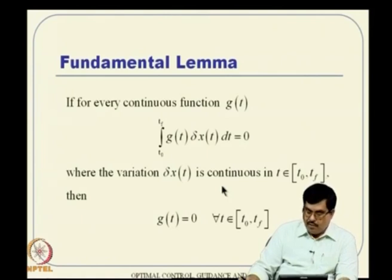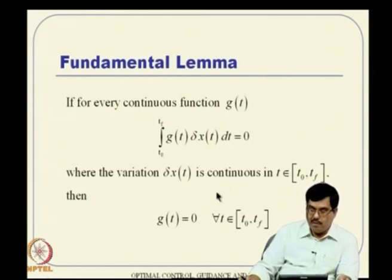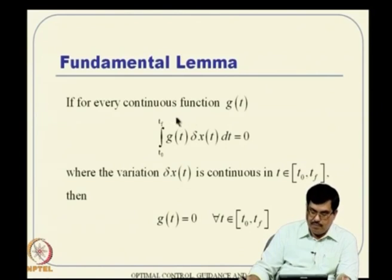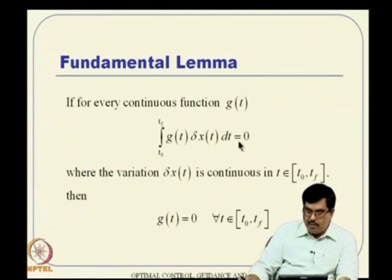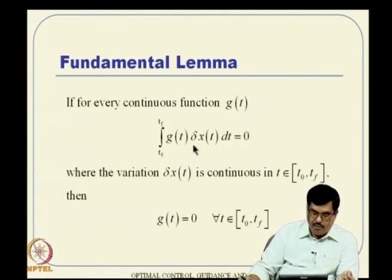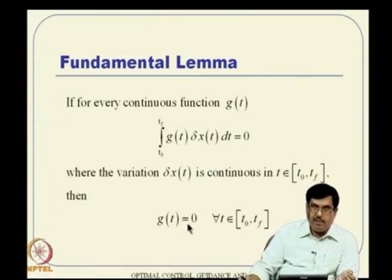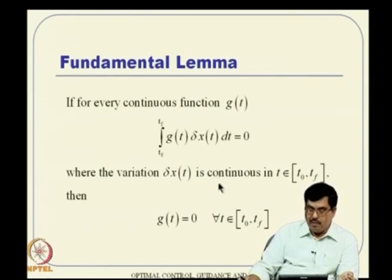We also proved it by contradiction: we took an interval, made the function zero everywhere except in that interval, and then constructed a delta x that is non-zero in that particular interval. The integral then happens to be non-zero—a counterargument. Taking help of that, we showed it cannot happen, proving by contradiction that g of t has to be zero. It is a simple theorem but with many great implications later.